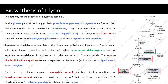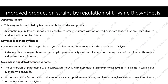Now let us discuss the regulation steps involved in biosynthesis of L-lysine. L-lysine is the form produced during fermentation that can be utilized by the body. The purpose of studying this regulation process is to improve the microbial strains for better yield of lysine in the fermenter. The first enzyme is aspartate kinase. This enzyme is controlled by feedback inhibition of the end products. By genetic manipulations, it has been possible to create mutants with an altered aspartate kinase that are insensitive to feedback regulation by L-lysine.